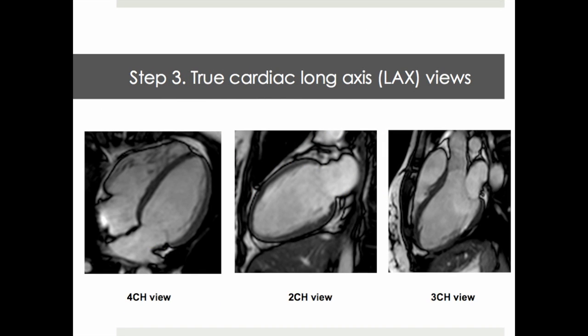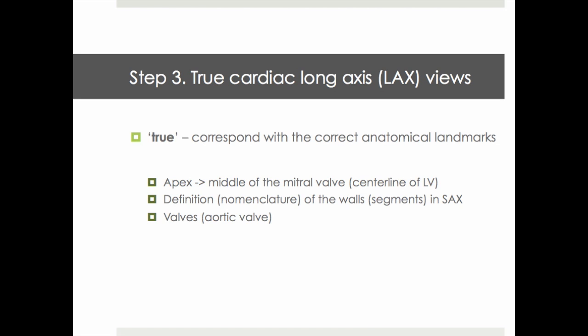Our next planning steps are the true cardiac long axis views: 4-chamber view, 2-chamber view and 3-chamber view. They are 'true' in the sense that they correspond with the correct anatomical landmarks — the definition of a long axis following the center line of the left ventricle, definition or nomenclature of the walls, segments in short axis, as well as minding the inclusion or exclusion of the aortic valve.